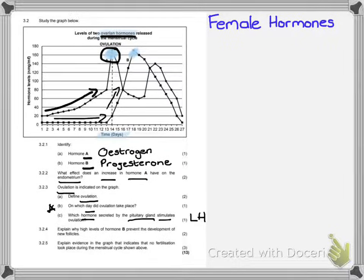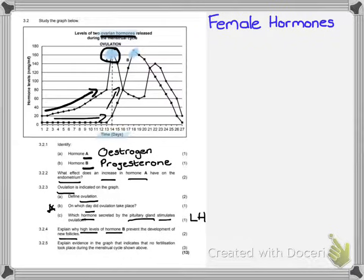Question 3.2.4 asks: explain why high levels of hormone B — progesterone — will prevent the development of new follicles. Remember, progesterone is a pregnancy hormone. You don't want to be pregnant with one fetus and still be making follicles for a new one. So the answer is: high levels of progesterone will inhibit the secretion of FSH. For the two marks, you're acknowledging that progesterone inhibits FSH, preventing new follicle development.